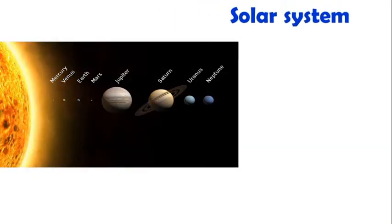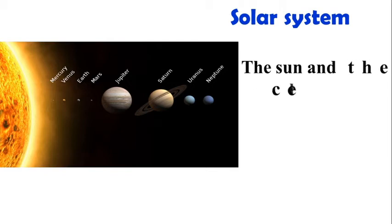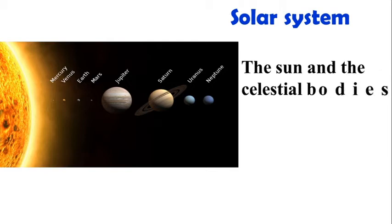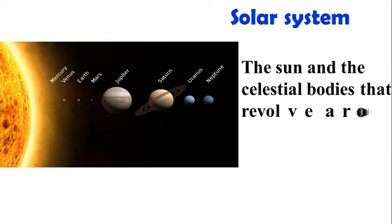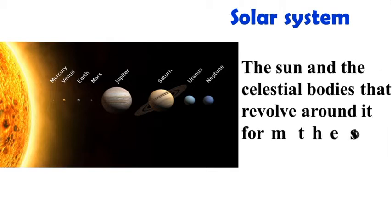Solar System: The sun and the celestial bodies that revolve around it form the solar system.